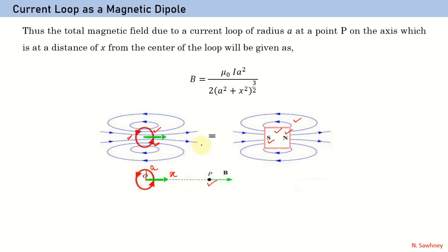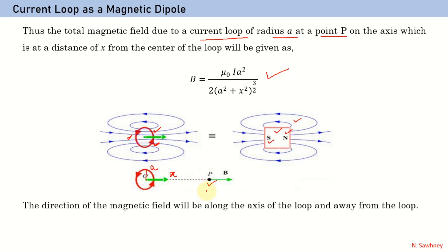The total magnetic field due to this current loop of radius a at a point P on the axis is given by: B = μ₀Ia² / 2(a² + x²)^(3/2). This has already been derived in the previous chapter, Chapter 4, so you must watch that video before going into detail of this topic. The direction of the magnetic field will be along the axis of the loop and away from the loop, as shown.